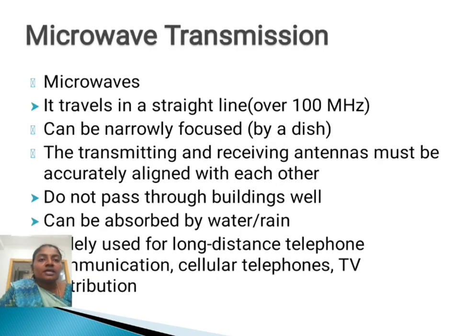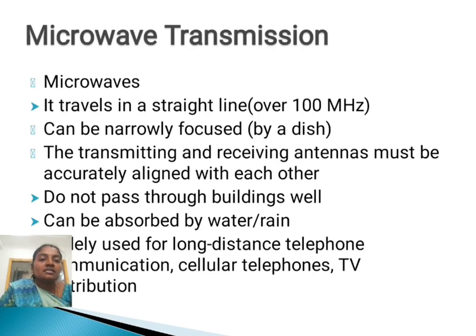The next one is microwave transmission. Microwave transmission travels in a straight line over 100 MHz and can be narrowly focused by a dish. The transmitting and receiving antennas must be accurately aligned with each other. They do not pass through buildings well and can be absorbed by water and rain. Widely used for long distance telephone communication, cellular phones, and TV distributions.